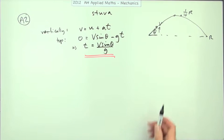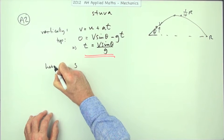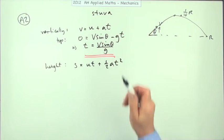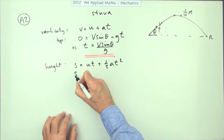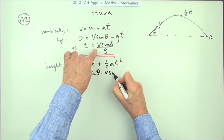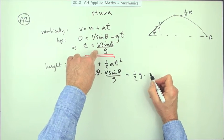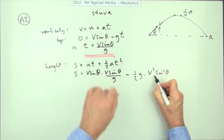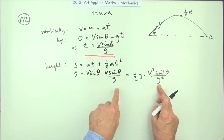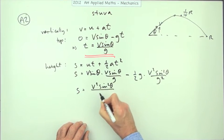That was the first mark. Next, find the maximum height using s = ut + ½at². The initial velocity is v sinθ, and the time taken is v sinθ / g. Substituting and simplifying: the two terms both have v² sin²θ, with one being a whole and the other a half, so the final answer is h = v² sin²θ / 2g. And that equals one-tenth of the range R.